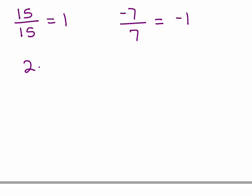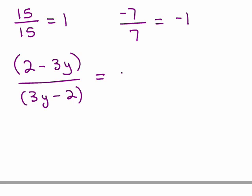So if you have 2 minus 3y over 3y minus 2, if you recognize these are opposites of each other, you'd say, oh, the answer is negative 1. It's very similar.